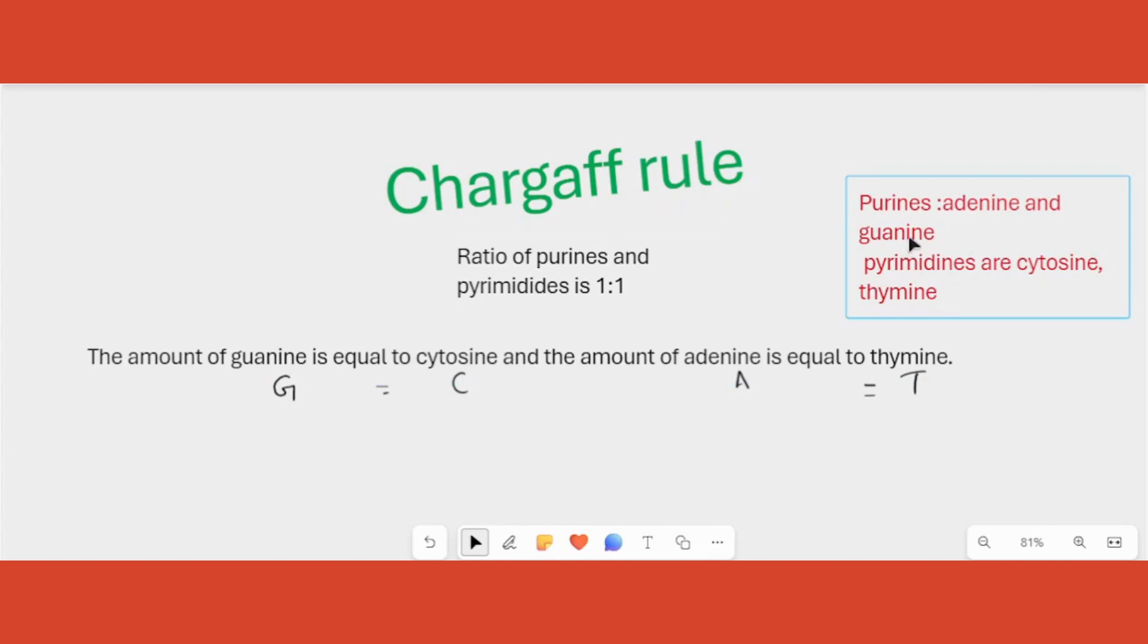Adenine and guanine of the DNA are purines. Now what is the rule? This rule states that A and G, if you take A and G and if you take C and T, its ratio of this to this would be equal - that is what 1 is to 1 means.